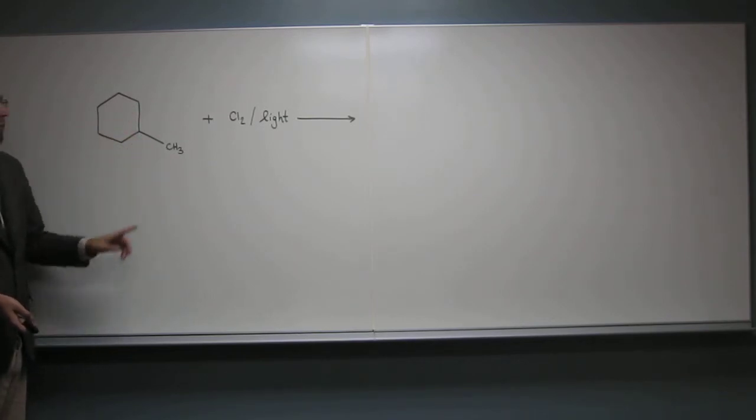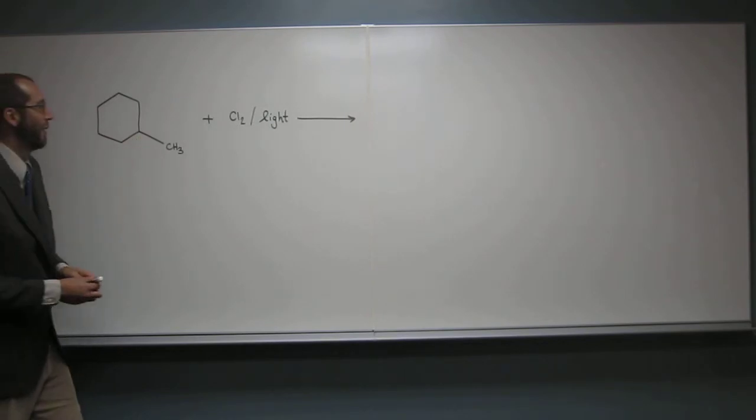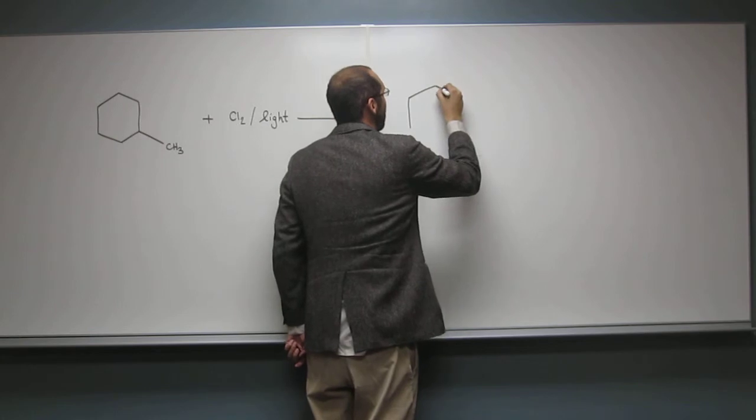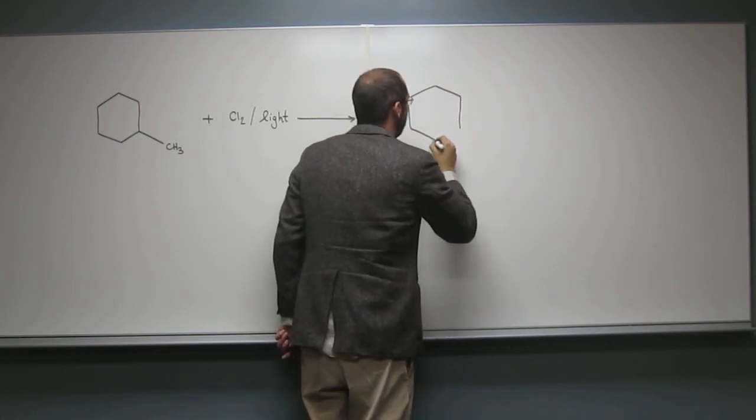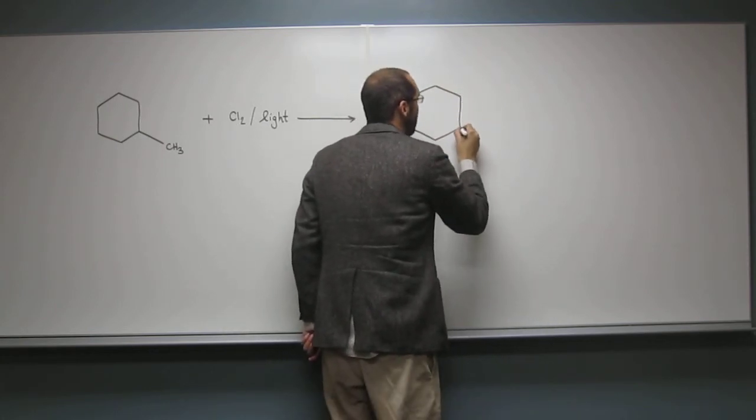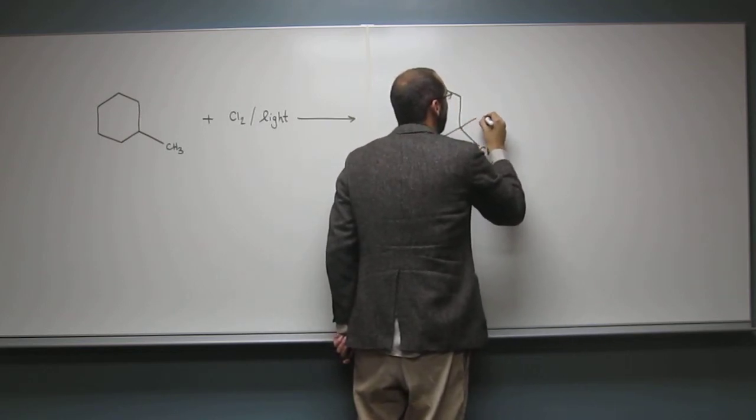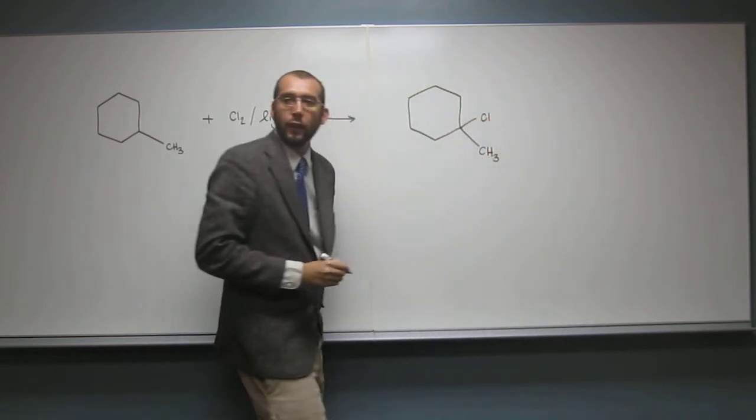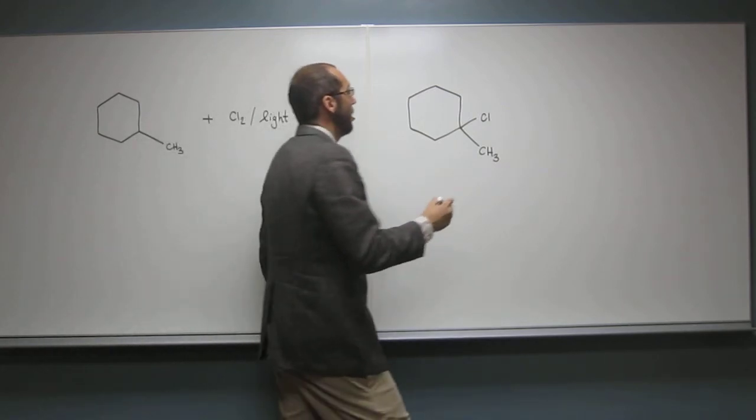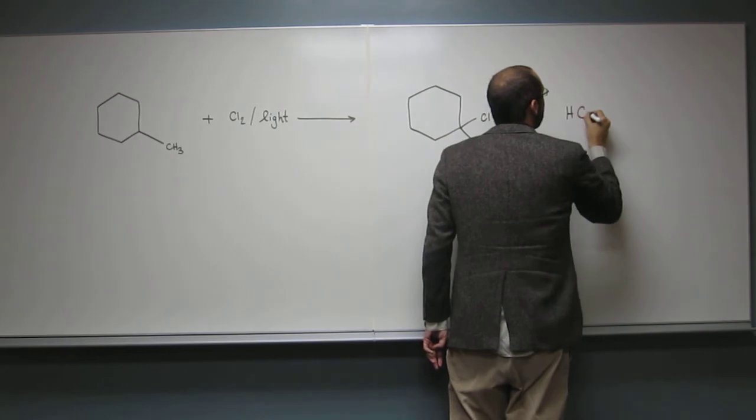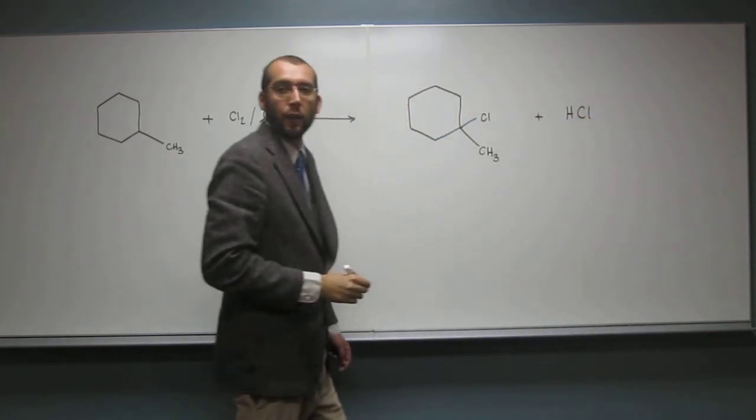So where is it going to go? On the tertiary, right there. So let's draw the product. It's going to be the same thing, except instead of that hydrogen on the tertiary carbon, it's going to be replaced with a chlorine, like that. And then the inorganic product that they want you to write is the HCl, like that.